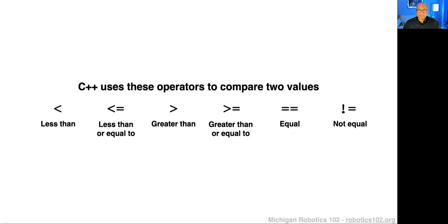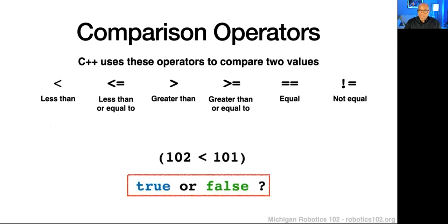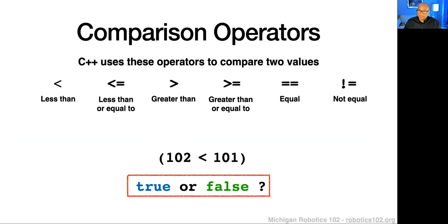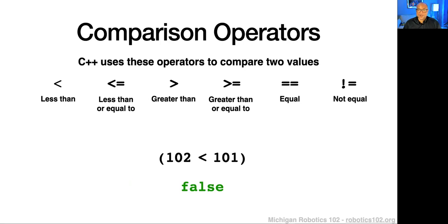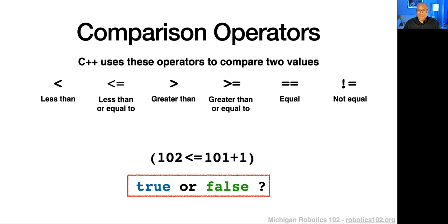It's probably best to consider this with some examples. Is the condition '102 is less than 101' true or false? Think about it for a second and take a sip of coffee. It should be pretty obvious — this is going to be false. 102 is definitely not less than 101, so that condition evaluates to false. But what about '102 is less than or equal to 101 plus 1'? This is true.